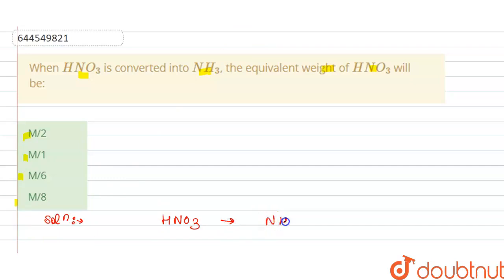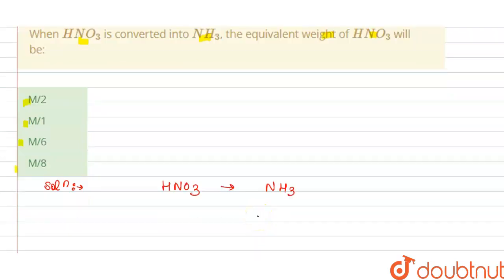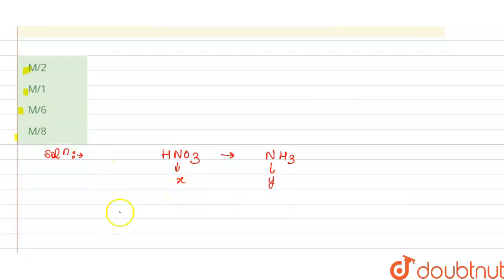...will give us NH3. So the equivalent weight of HNO3 will be... Let's suppose in this, oxidation state of nitrogen is x, and in this y. So hydrogen oxidation state is plus one, plus x, and oxygen is minus two, so this is three multiplied by two equals to zero.